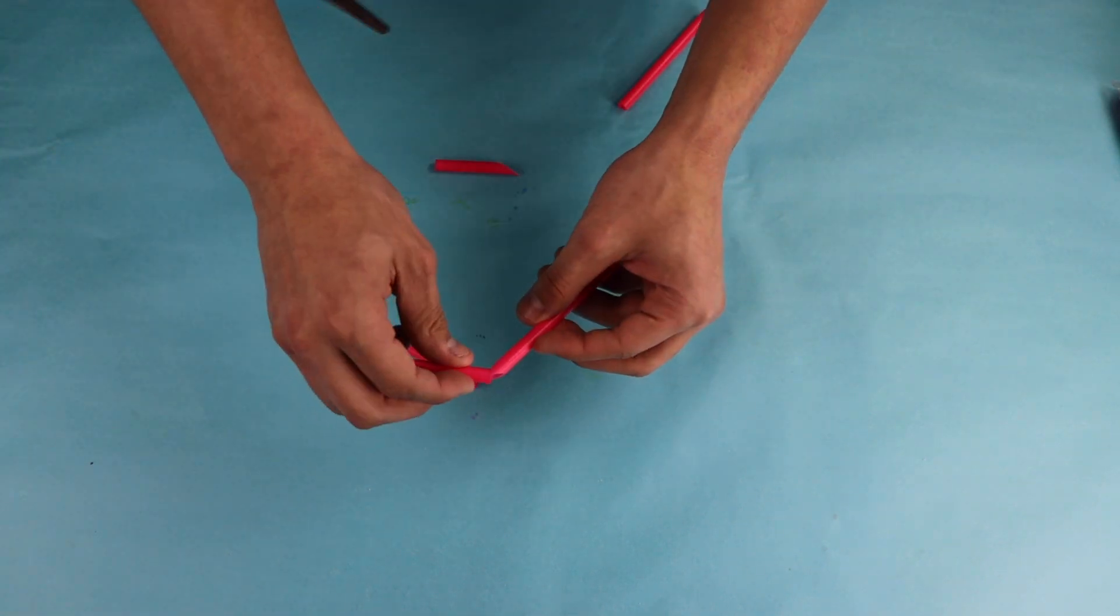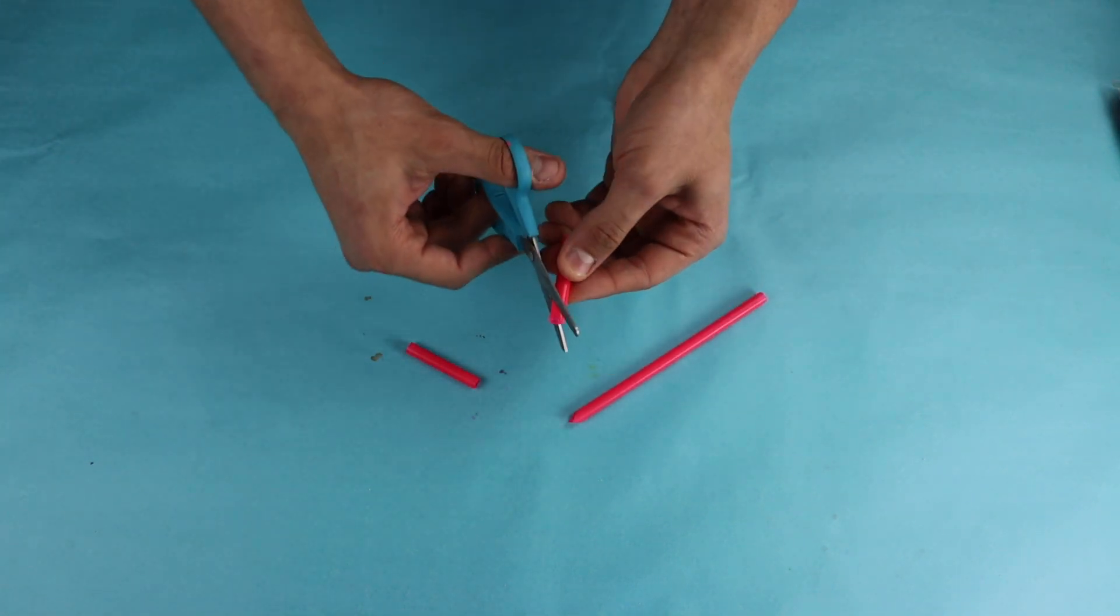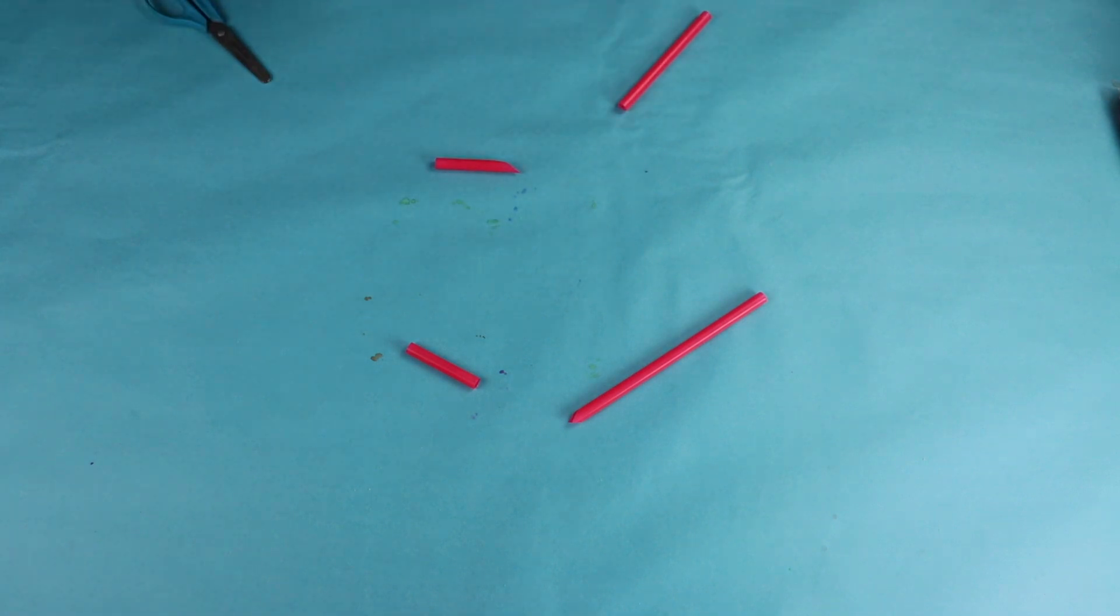Step three, take one of the previously cut straw segments and cut it so that it comes to a point.